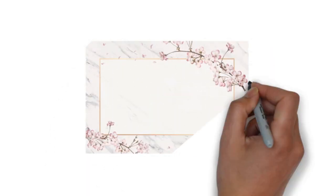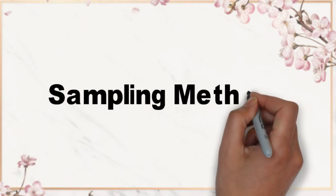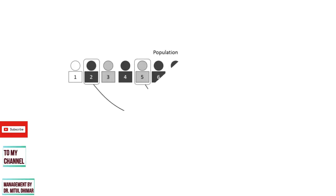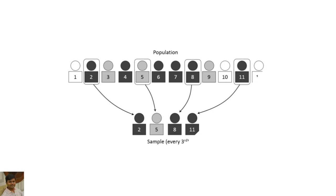Hello friends. Today we are going to study sampling methods in research methodology. Sampling is a process used in statistical analysis in which a predetermined number of observations are obtained from a large population. The methodology used to collect samples from a larger population depends on the type of analysis being performed.